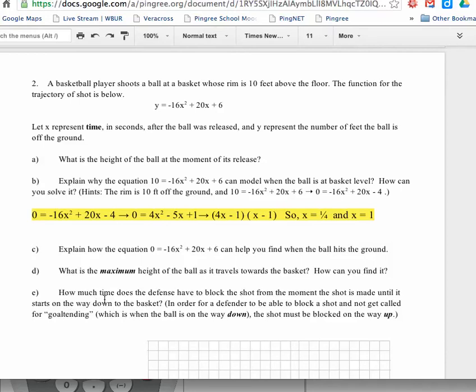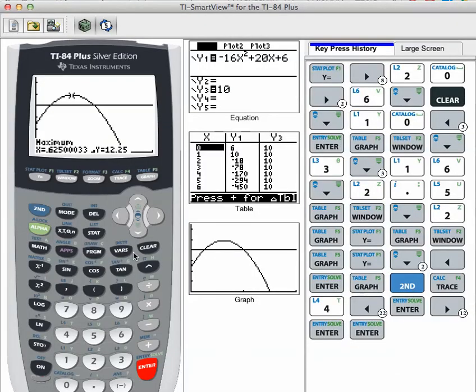So how much time does the defense have to block the shot from the moment the shot is made until it starts on the way down? Okay? So goal tending is only when the ball is on the way up. So if I go back to the equation and I look, I've got 5 eighths of a second. So a little bit more than half of a second. 0.625 of a second. And it gets to the very top of the arc. That's how much time I have.